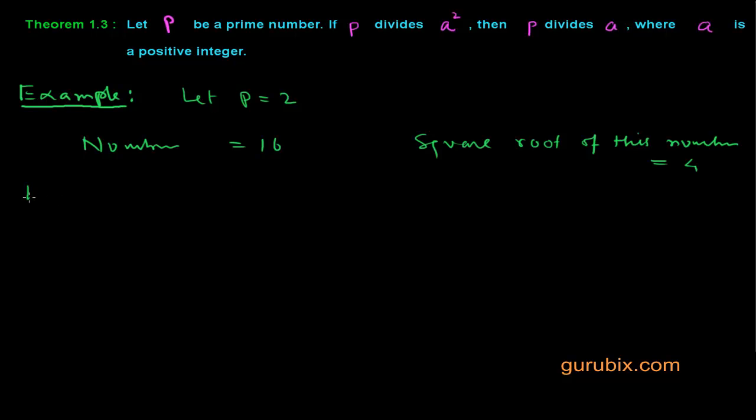We observe that 16 is divisible by 2, therefore the square root of 16 is also divisible by 2. This is the motive of this theorem.